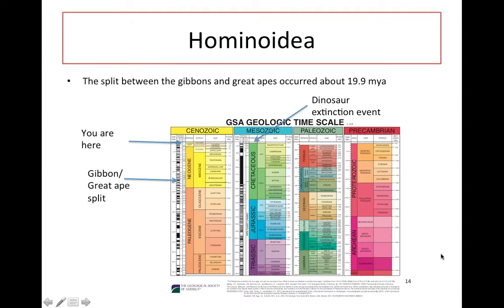I've put this for reference — this is a geological history by the Geological Society of America. This is when Earth began, and this takes up about 85% of Earth's time, with the other three eons making up about 15%. Here you have the dinosaur extinction event, which is where the age of the mammals began. Without the dinosaurs and giant reptiles, we suddenly had a huge radiation event of mammals — going from very few species to loads of species in a very short amount of time, with mammals occupying all the niches left over from the extinction of the dinosaurs.